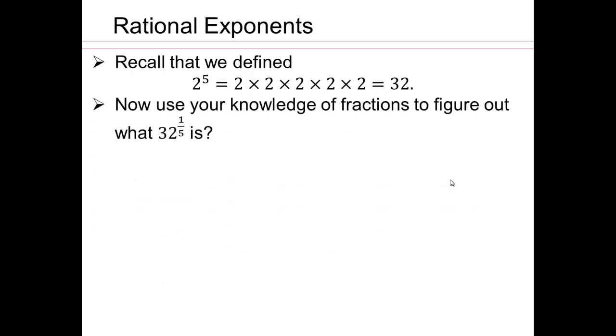So we're going to worry about rational exponents. Recall that if I wrote 2 to the fifth, that means 2 times 2 times 2, 5 times, right? So rational number, can you think of a rational number? Well, 5 is a rational number. But what if I said, can you make sense of 32 to the power 1 fifth? Remember what fractions mean to you. 1 fifth. That means 1 part out of 5. So use your knowledge of fractions, and be a mathematician right now. You know, in mathematics, doing research is doing what we're doing right now. You play with it.